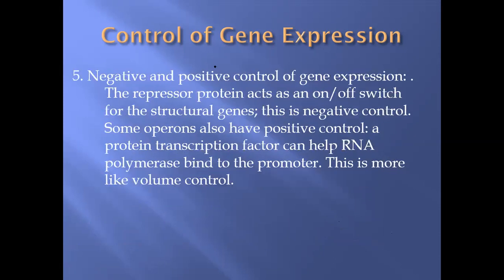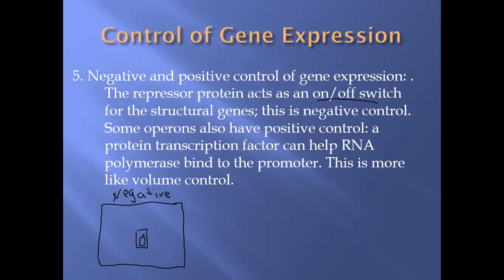There are two forms of control for gene expression. The one we just talked about with lactose is like an on/off switch — the gene is either completely on or completely off. This is called negative control. Think of it like a light switch: it can be on or off with no intermediate position.